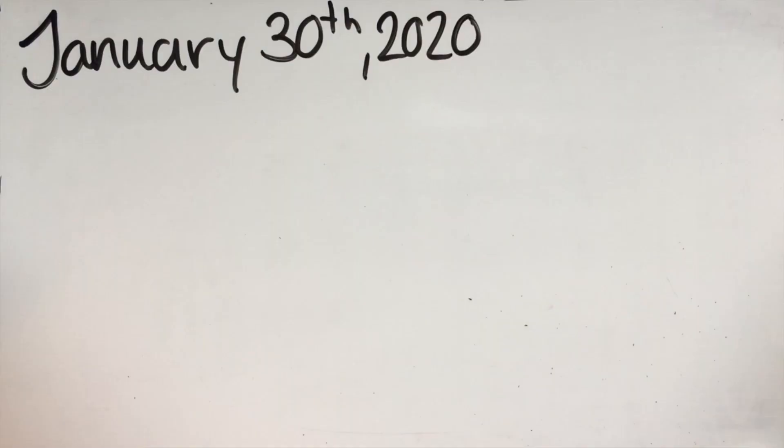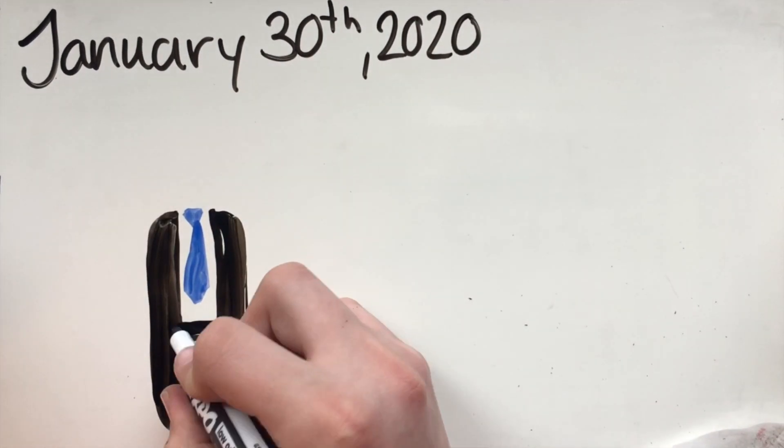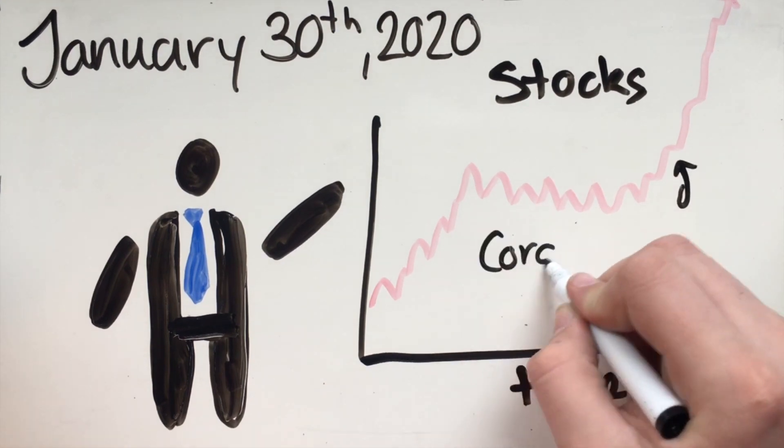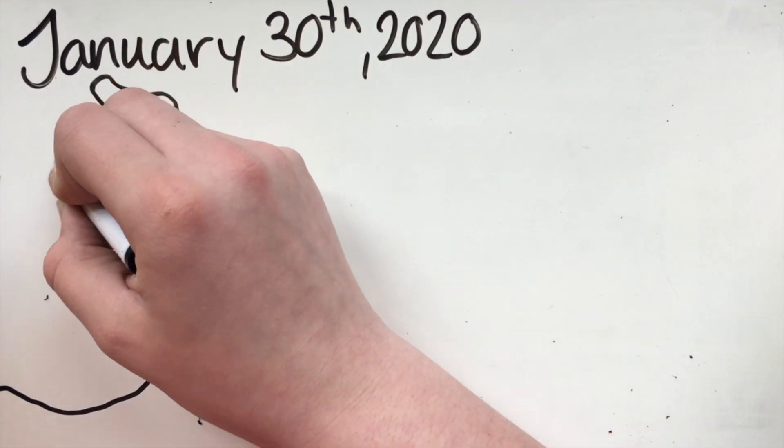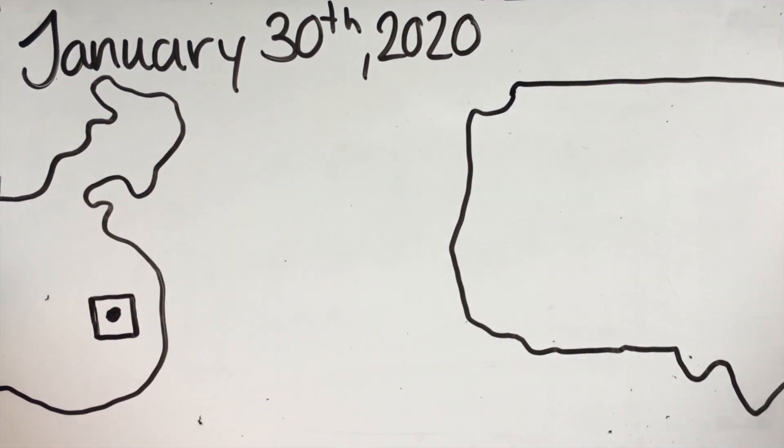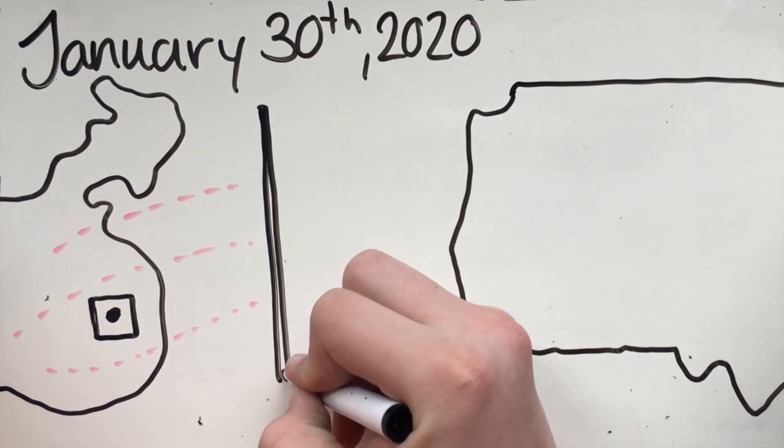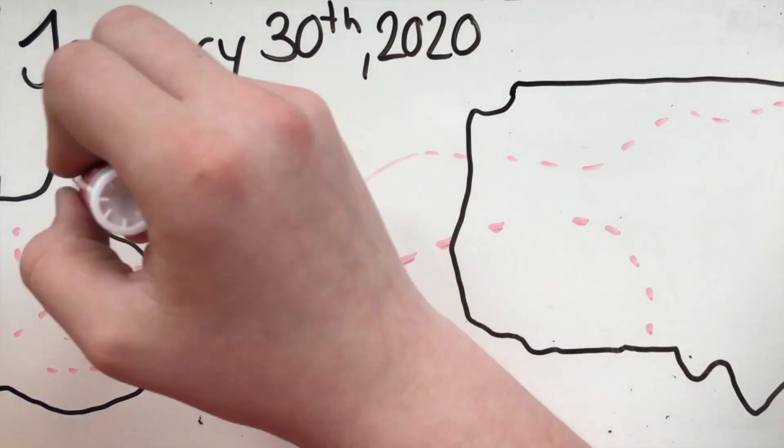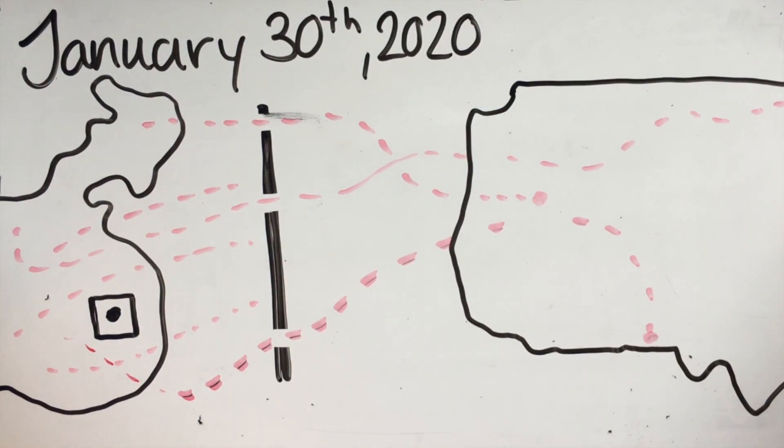On January 30th, Commerce Secretary Wilbur Ross stated in a Fox interview that the coronavirus will be good for the U.S. economy. Secretary of the Human Health Services, Azar, directly warned Trump that the virus could morph into a pandemic, but Trump discounted this warning as an alarmist, then proceeded to host a campaign rally in Iowa. That same day, Trump restricted entry into the U.S. from China, but it included many exemptions, allowing tens of thousands of passengers to continue entering the country.